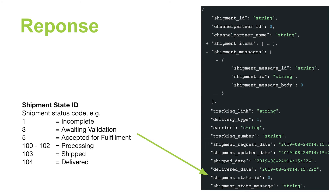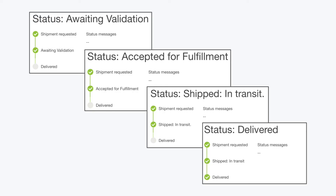In order to tell where the shipment is in the shipment request lifecycle, you can look at the shipment state ID. In the console, you can see that the status moves from Awaiting Validation to Accepted for Fulfillment, then Shipped in Transit to Delivered.